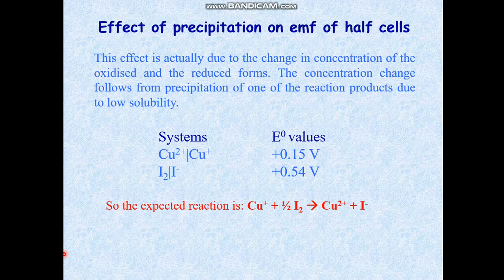We shall take two half cell reactions. One is the cupric/cuprous system, which has a redox potential of +0.15 volt, and the next is the iodine/iodide system, which has a redox potential of +0.54 volt. Since the iodine/iodide system has the greater redox potential, it is expected that iodine should oxidize cuprous ion into cupric ion — but in reality this does not take place.